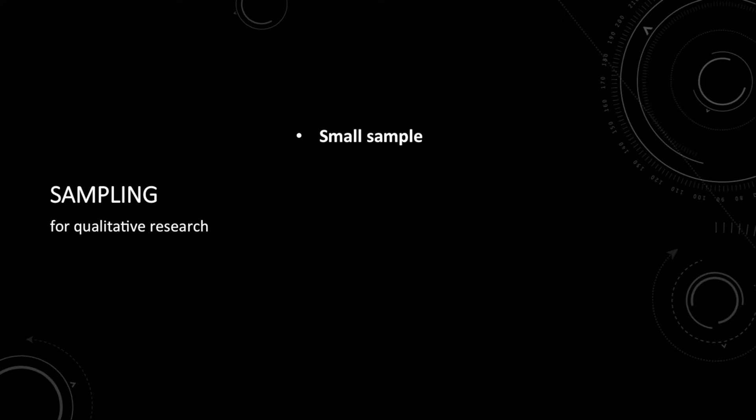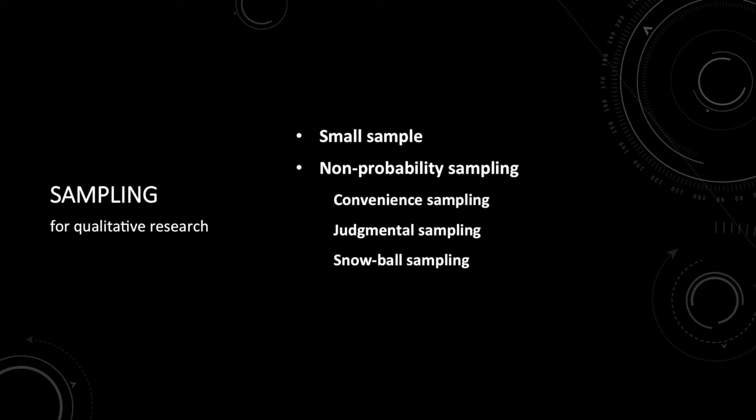Now we can move on to sampling. Qualitative studies generally call for a relatively small sample, and non-probability sampling methods are perfectly acceptable for most qualitative research. The reason for this is that qualitative research is usually less concerned with generalizability and representativeness. So let's take a look at three non-probability sampling methods.